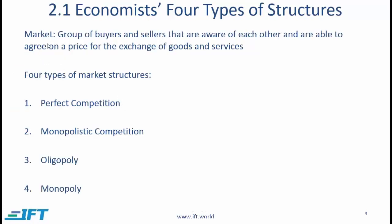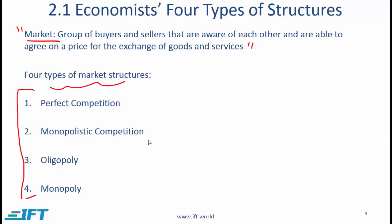A market is a group of buyers and sellers that are aware of each other and are able to agree on a price for the exchange of goods and services. Here are the four types of market structures that we will talk about.